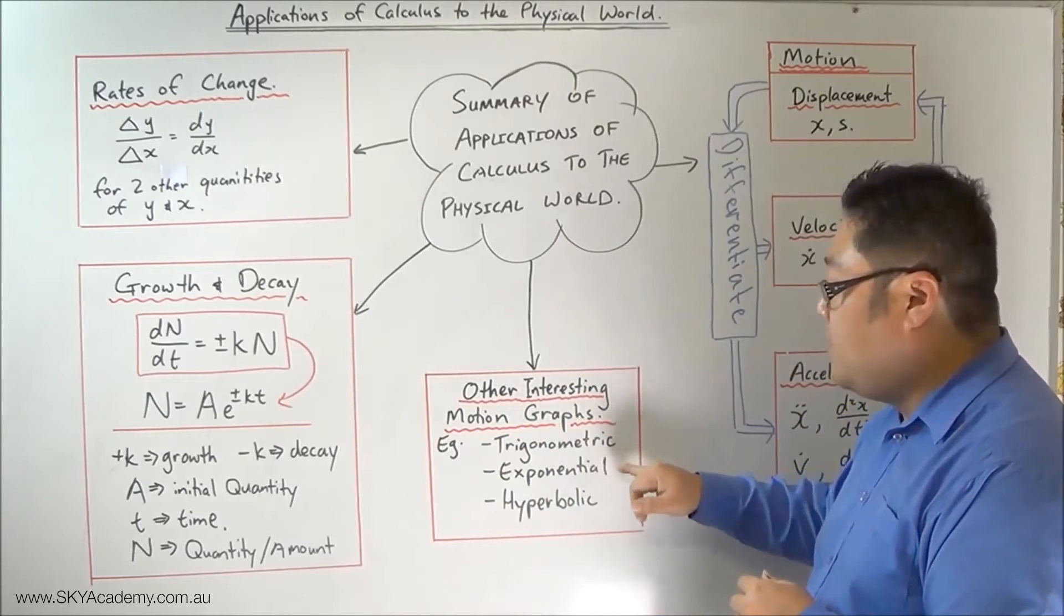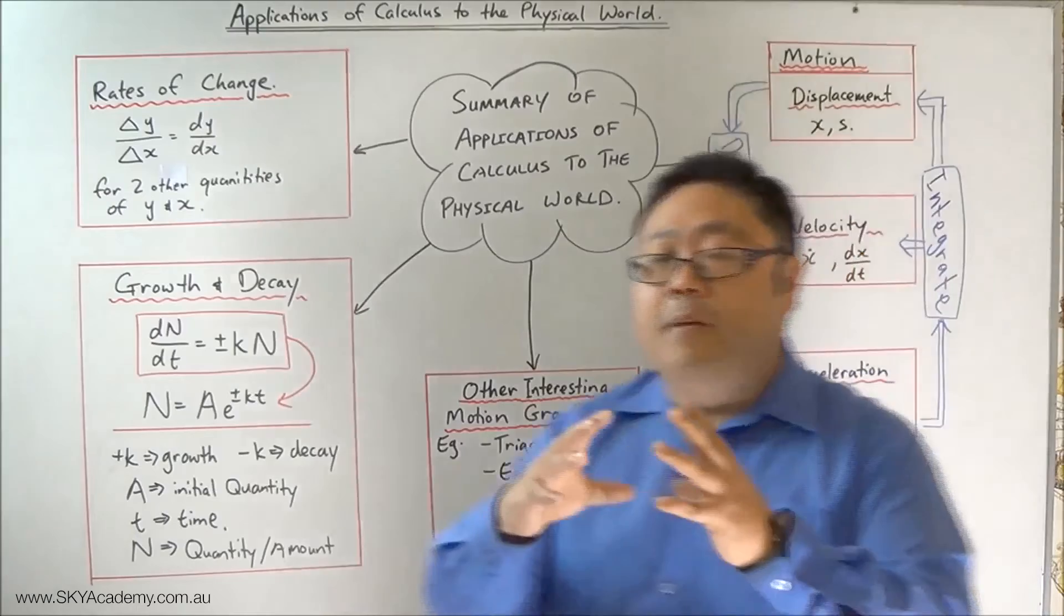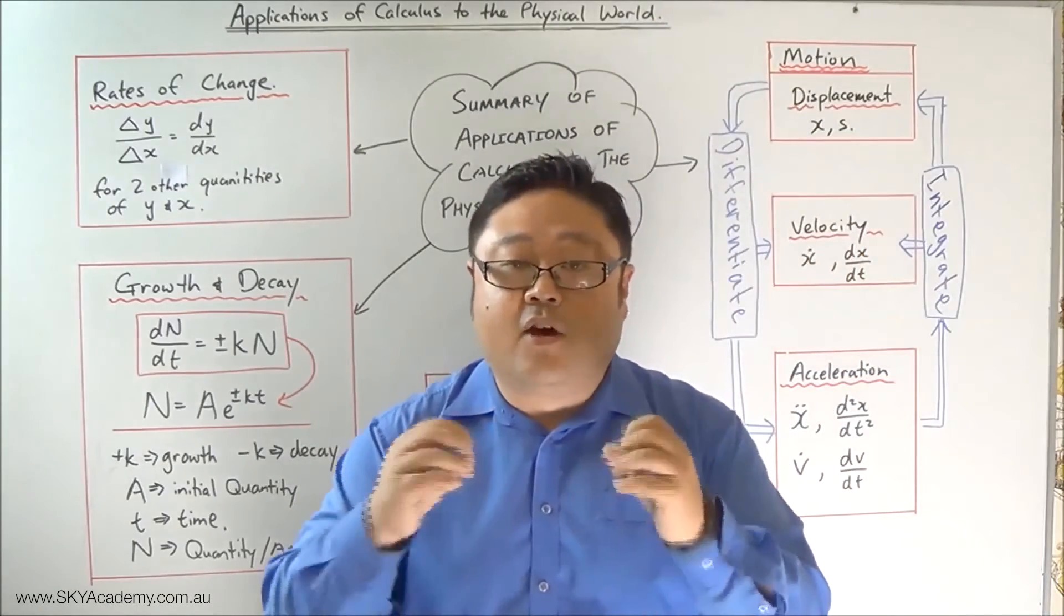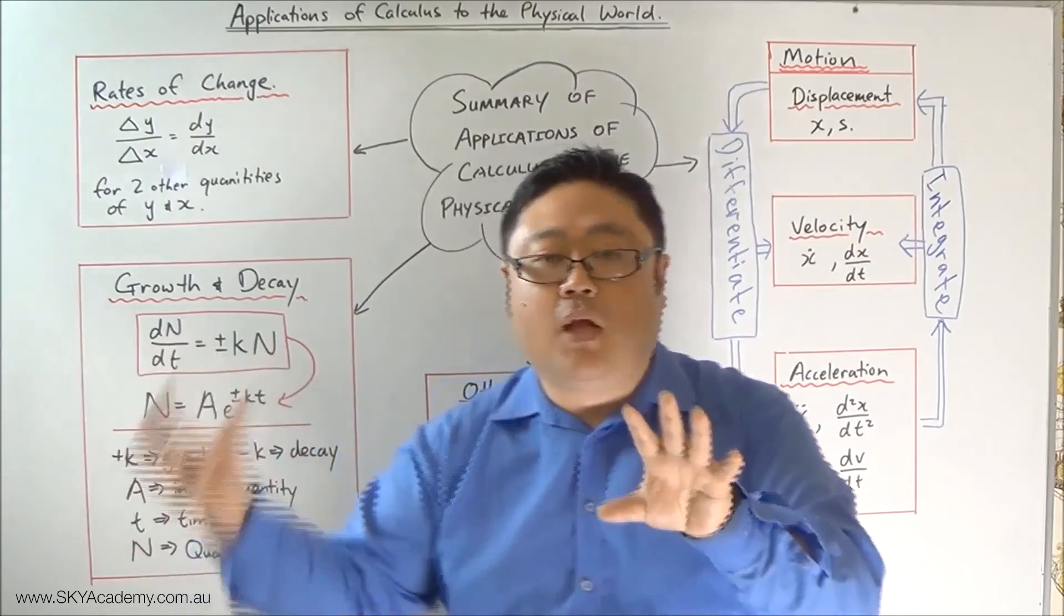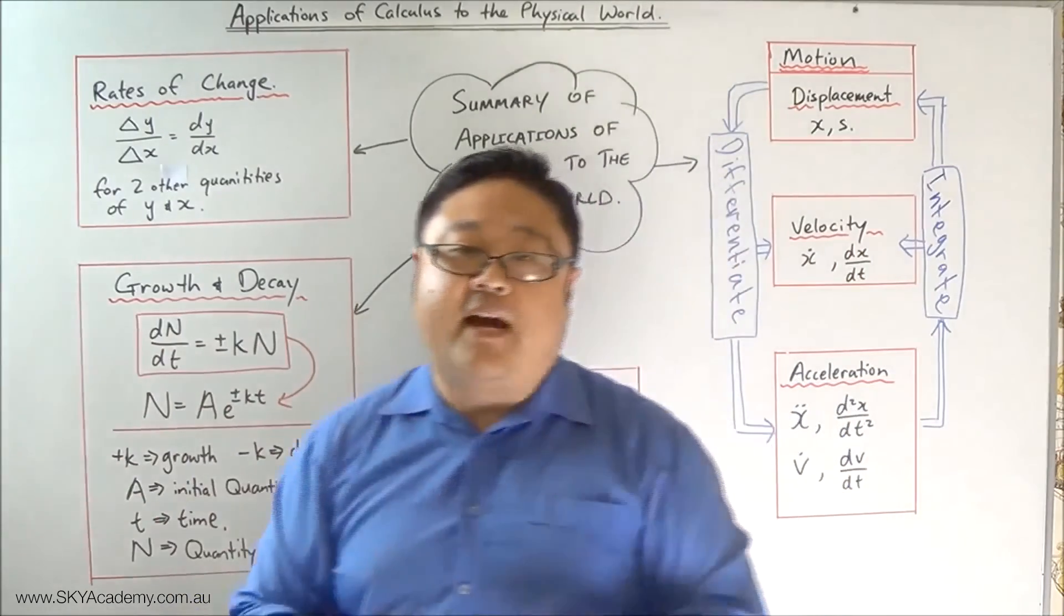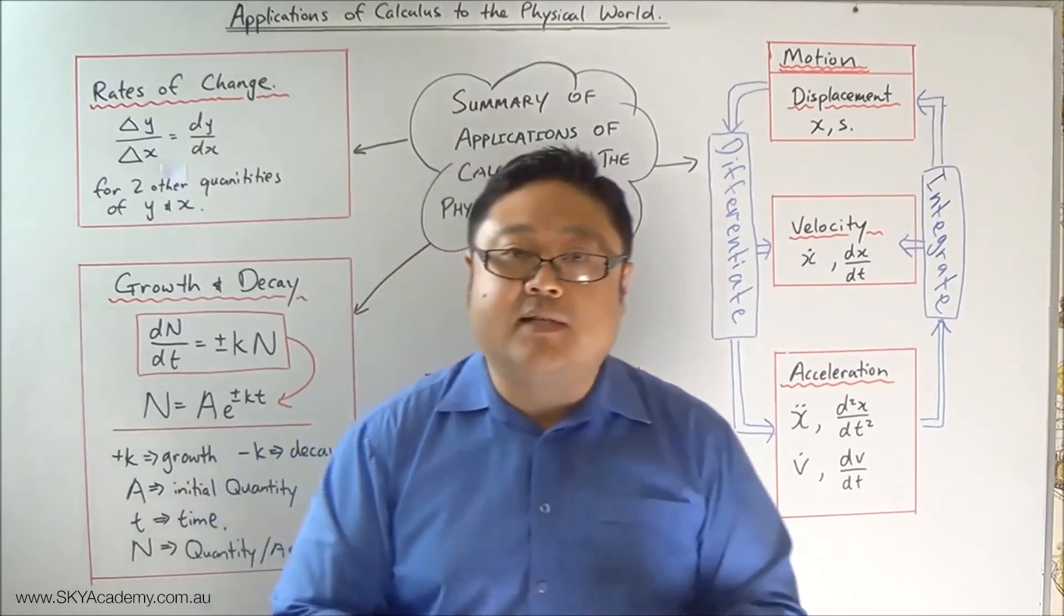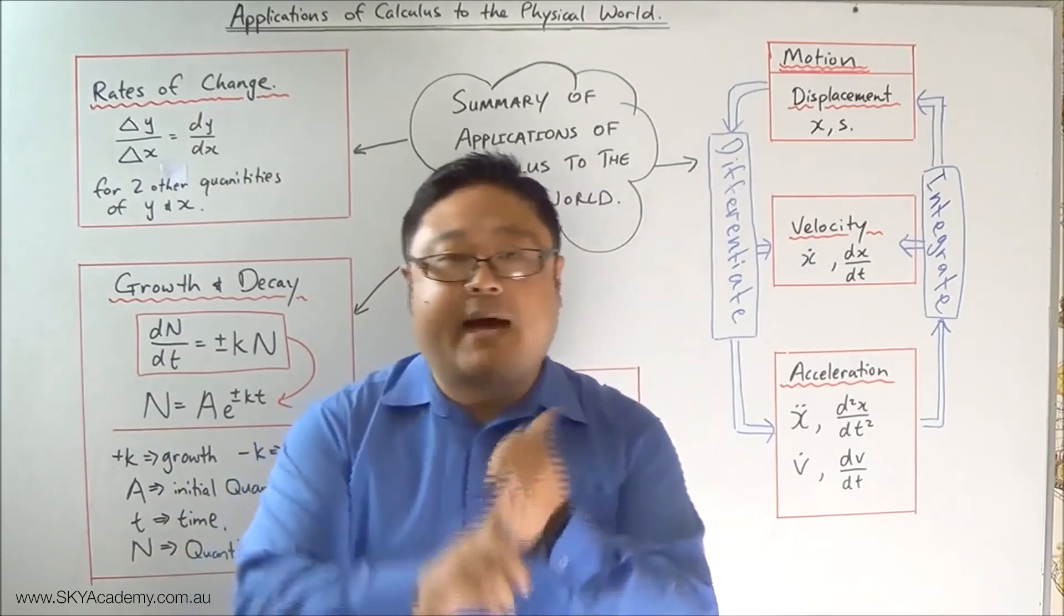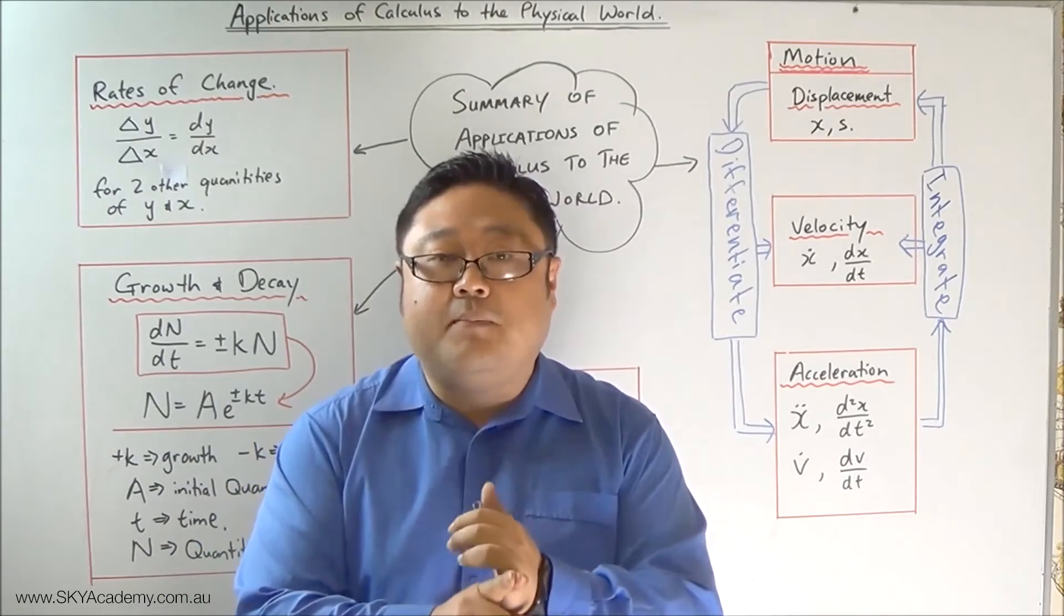They can take on trigonometric form, exponential form, and hyperbolic form. And by looking at those graphs for motion we were able to apply techniques of calculus that we had seen before in other units. So for example, we got to see how to work out the maximum minimum by looking at the stationary points and the turning points.